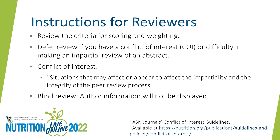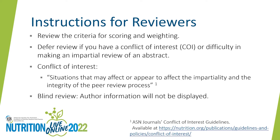We use a blind review process — you will not see an abstract's presenting author and co-author information. However, if you believe you have a conflict of interest based on the information provided, please decline the review and don't rate the abstract. During each review, you will be asked to consider the following abstract components: objectives, methods, results, and conclusions. Key attributes you will consider for scoring include significance — in particular, the novelty and relevance of the work to the field of nutrition — and writing quality, including clarity, conciseness, and grammar.